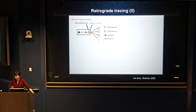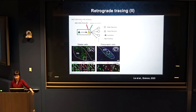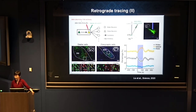Now we found GABAergic sleep neurons in the SNR, so we traced one more step back to look for excitatory input. A very strong excitatory input to the SNR comes from the subthalamic nucleus (STN) — well known in the basal ganglia field. When we activated STN neurons, we also saw an increase in non-run sleep and decrease in wakefulness.